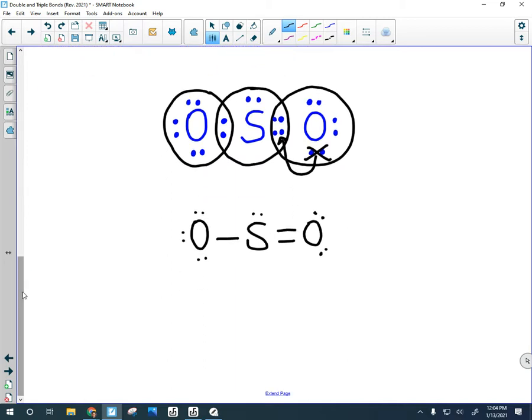I could have done the mirror image, right? So it is also valid to have done this with a double bond on the left and a single bond on the right. Like that. Kind of like the mirror image.